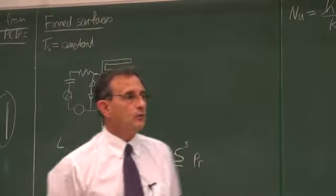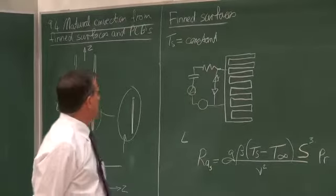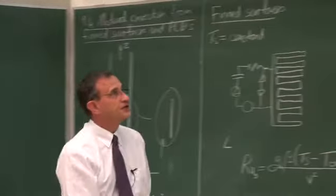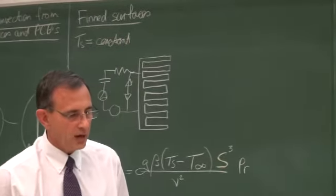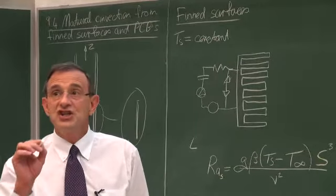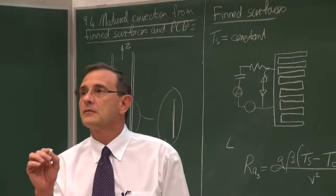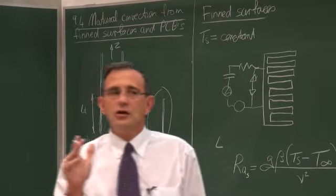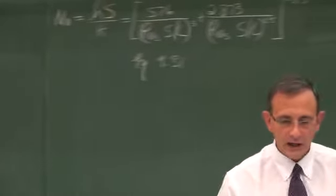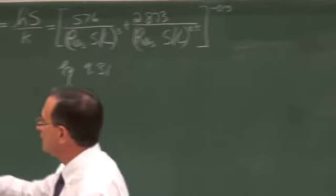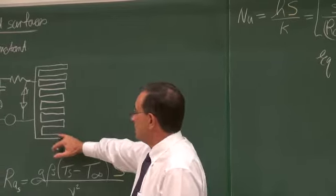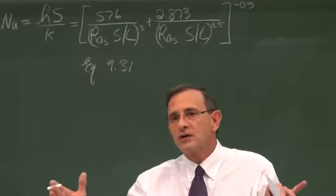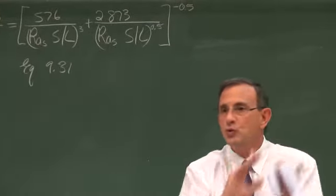When we get to electronic components on which we want to put fins, the question is: what should the distance S be between all the fins? So the question becomes, what is the optimum S? If you've got a laptop and you decide you don't want a fan and you want to design a very effective heat sink, you can put in lots of fins closely packed, or you can space them far apart. What is the optimum distance between the fins?